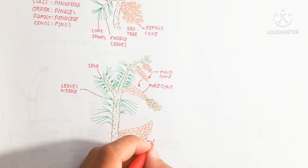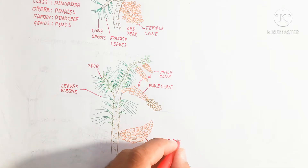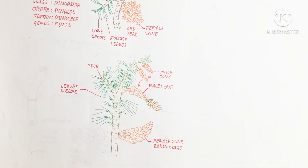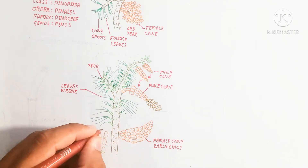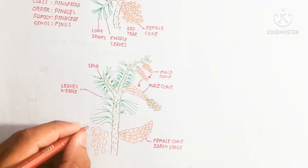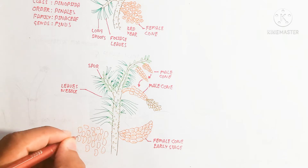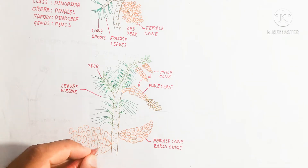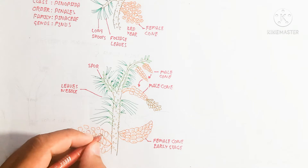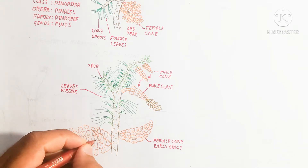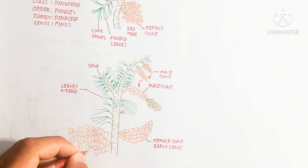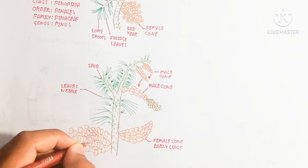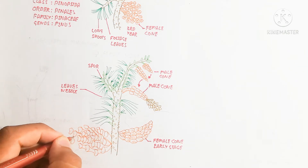The male cone contains spurs while the female cone contains an ovary, which is the receptive part for the male spurs. The female cone development from early stage to later stage is shown in the figure.